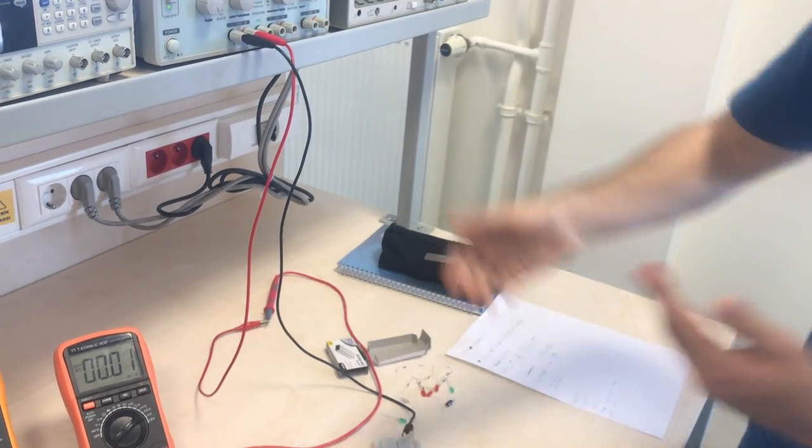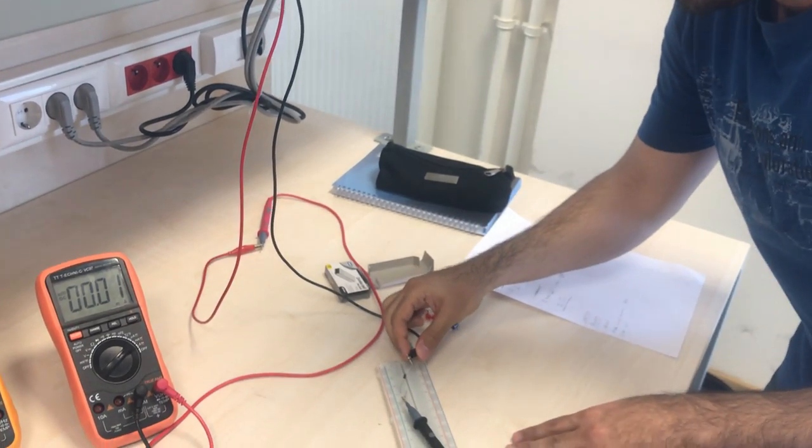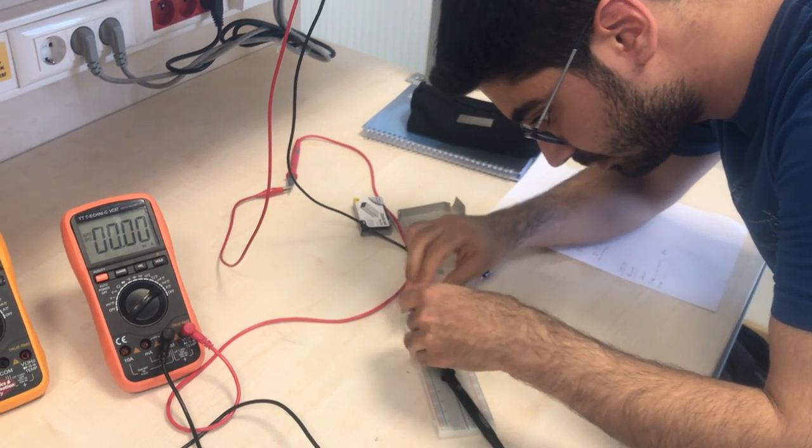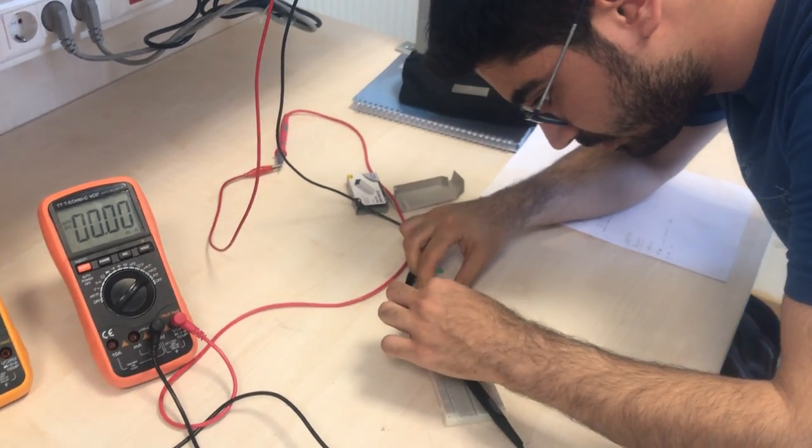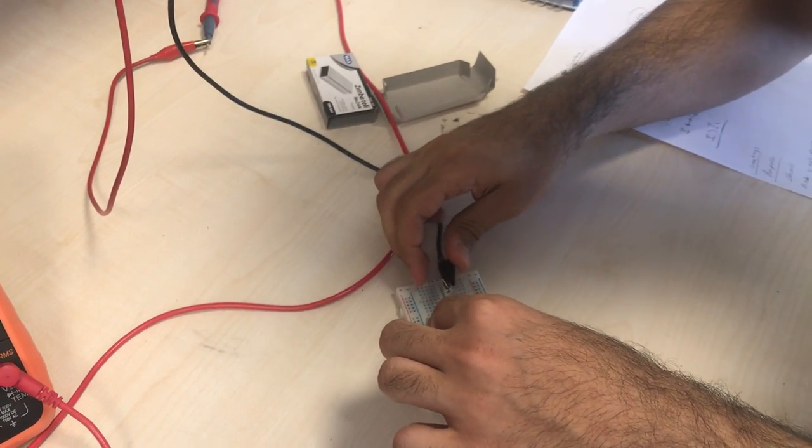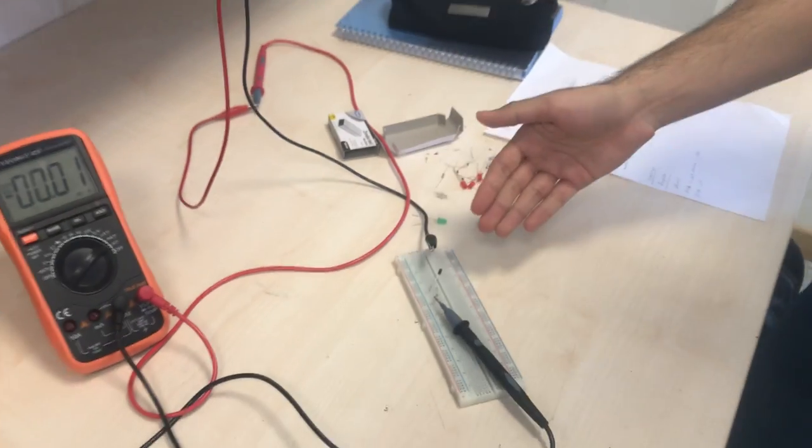As you see, it doesn't increase. And then I change the direction of the diode. And now I change the direction of the diode. Yes, I am changing the direction. Now this is the reverse bias diode.